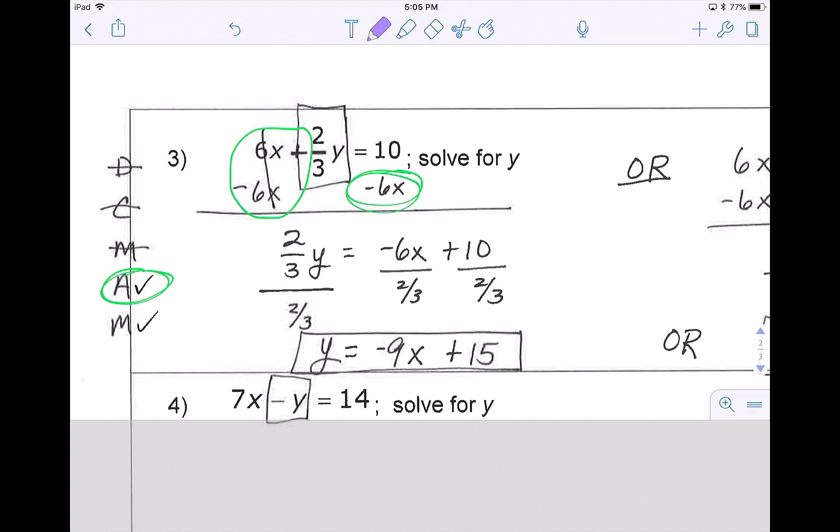So on the left side, it canceled, and I just brought down the two-thirds y. On the right side, we just rewrite because x and numbers are not the same. From here, we then have to multiply or divide. That two-thirds needs to be divided, and whatever we do to one piece, we have to do to all pieces.